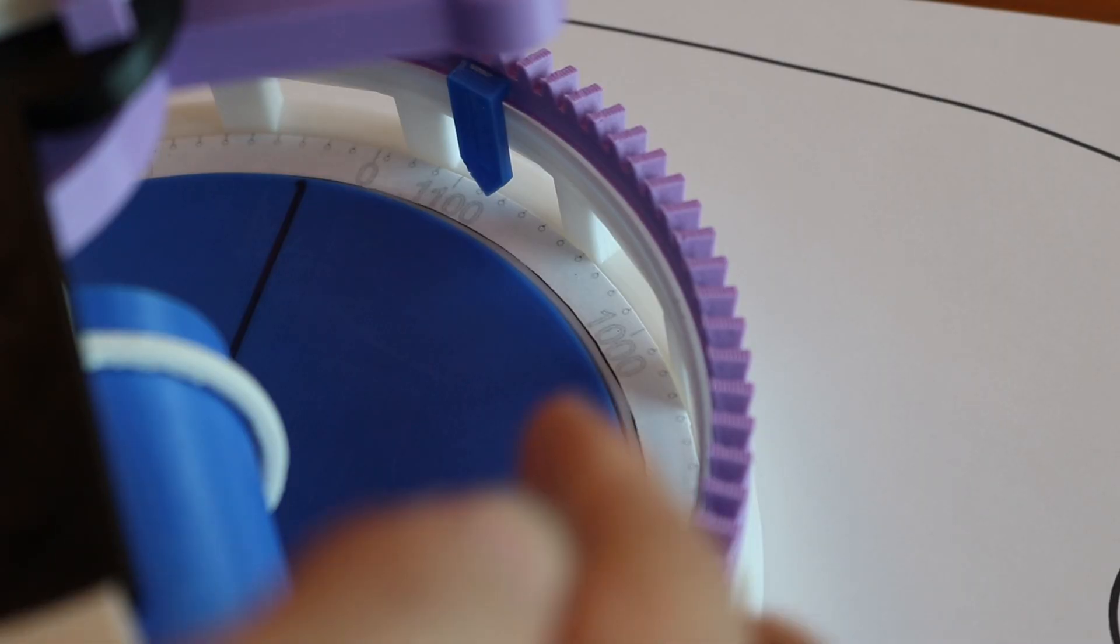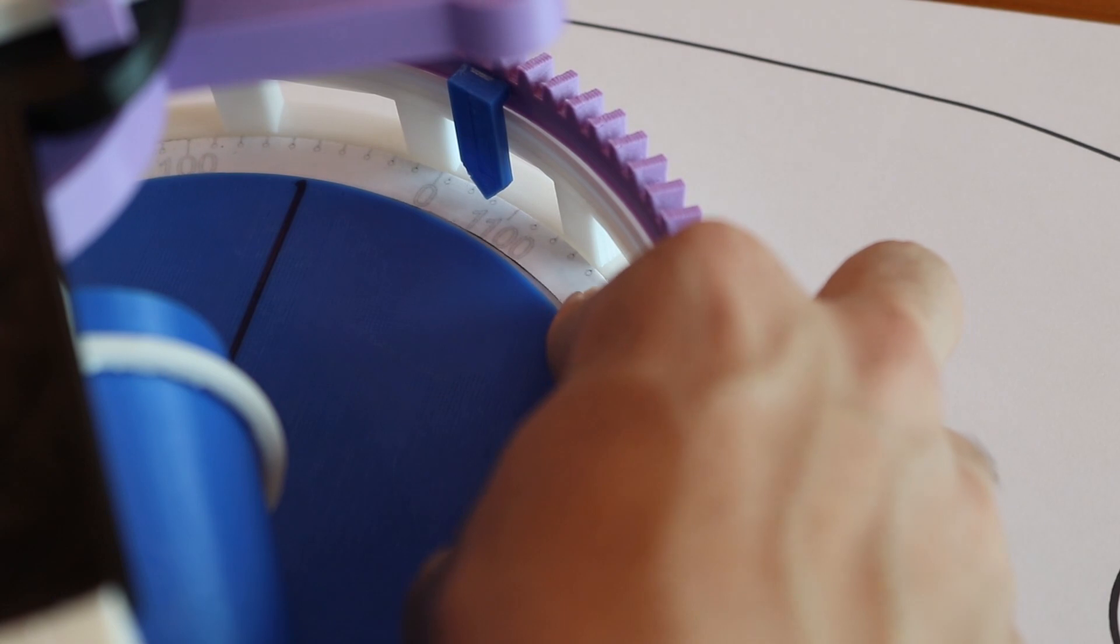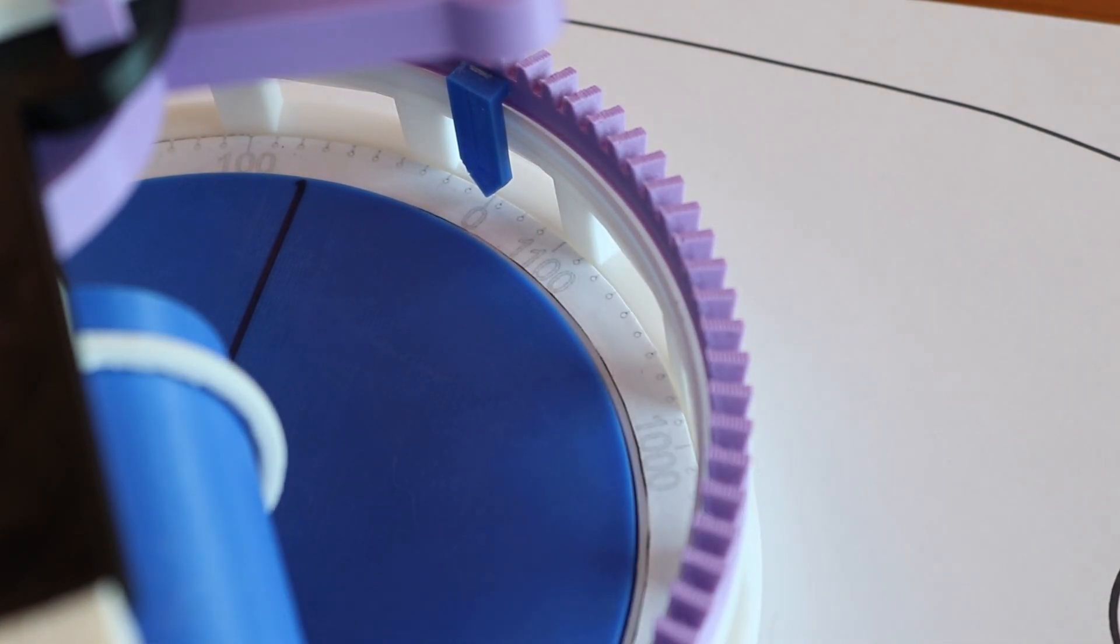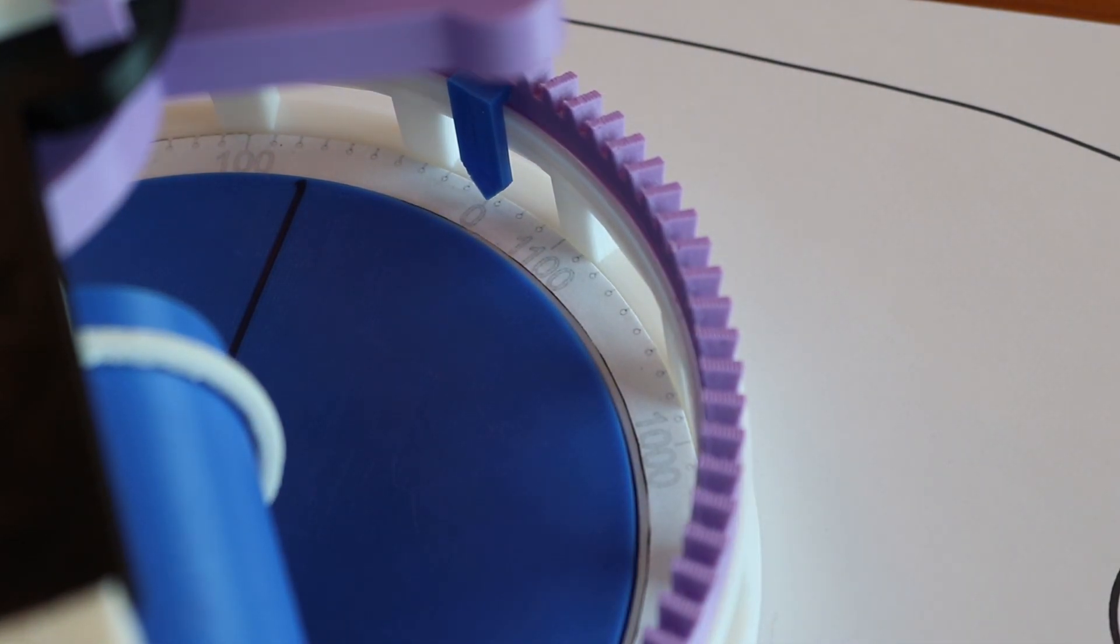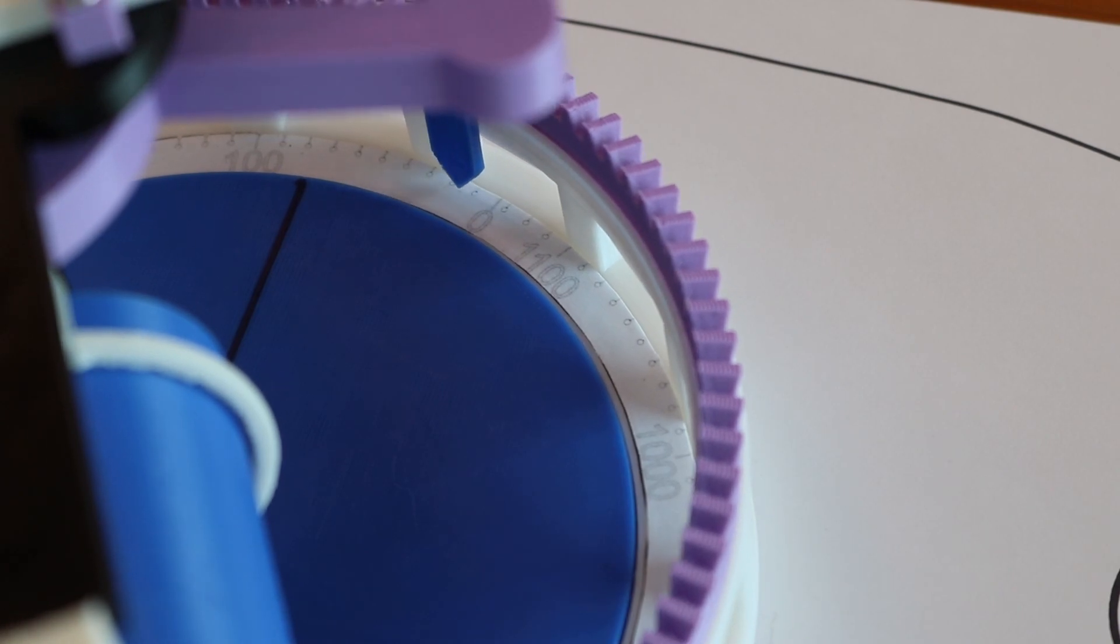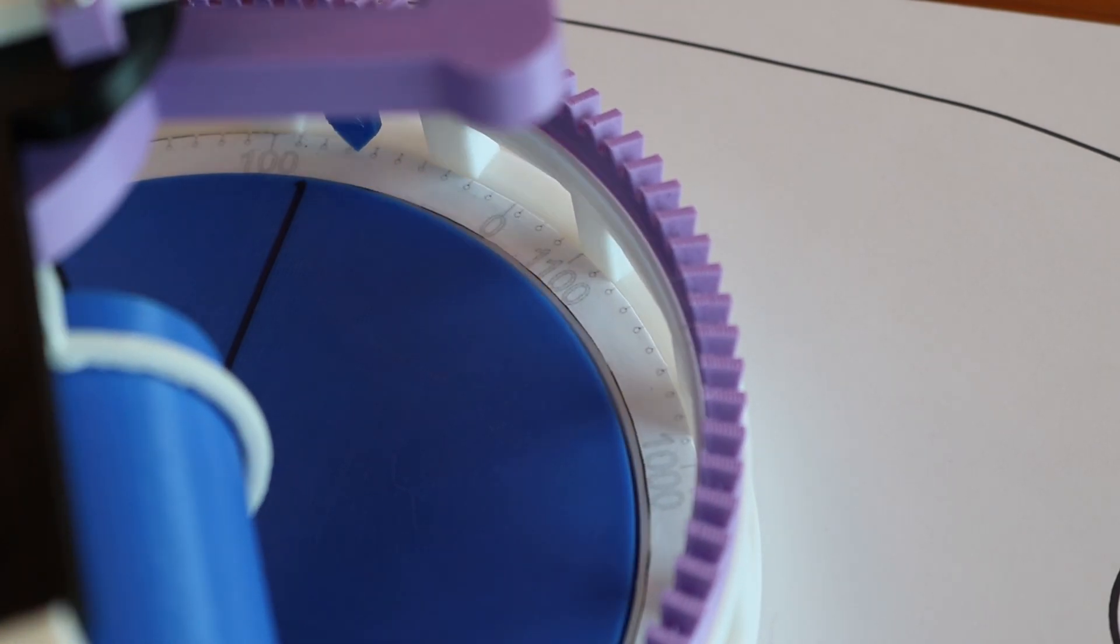To read the result, you first zero the output dial so that the pointer matches the zero. Then as you trace the curve, this gear containing the dial will move sideways depending on how much area was traced. The output can be read by looking at the position of the pointer compared to the readings, and the area is given in centimeters squared.